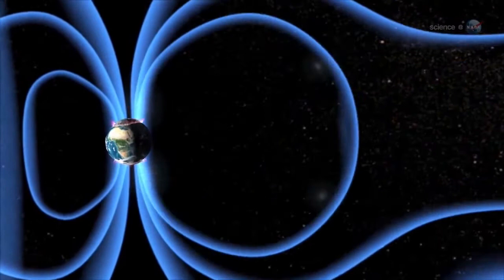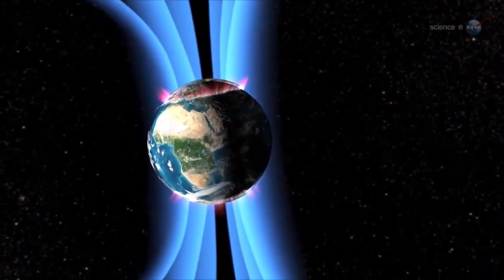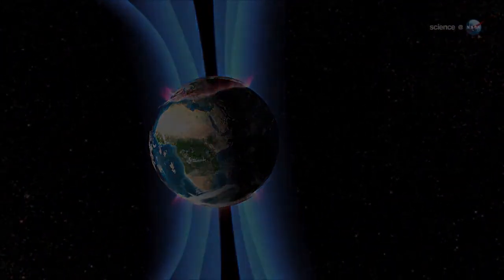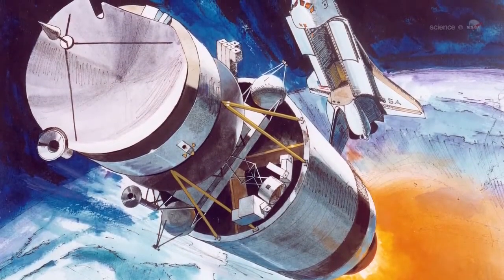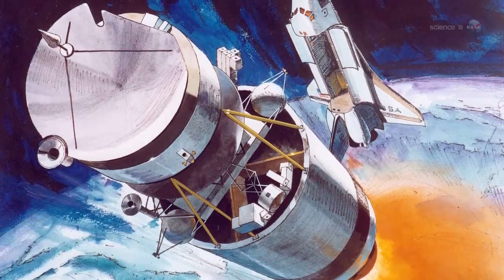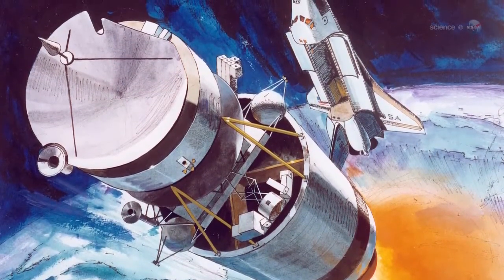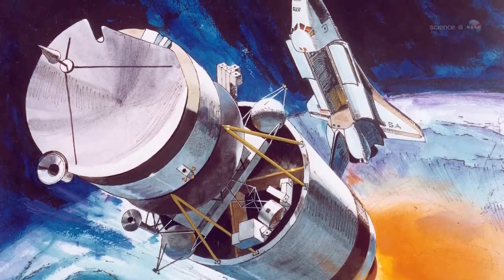To learn how to pinpoint these events, Scudder looked at data from a space probe that orbited Earth more than 10 years ago. In the late 1990s, NASA's Polar spacecraft spent years in Earth's magnetosphere and encountered many X-points during its mission.